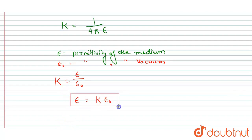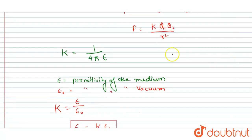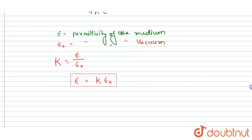So if you write it here, the force will be equal to 1 upon 4 pi epsilon q1 q2 by r square. And if there wasn't any medium, there is vacuum, then I will write F naught is equals to 1 upon 4 pi epsilon naught q1 q2 by r square. So this is equation 1 and this is equation 2.